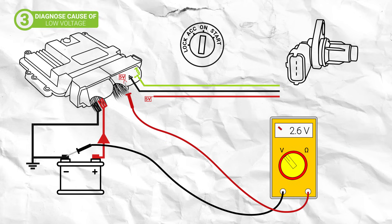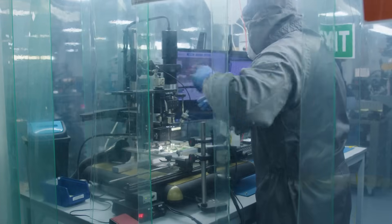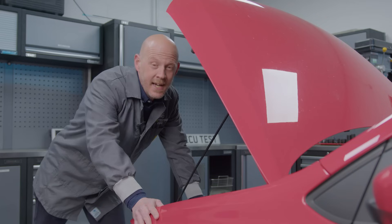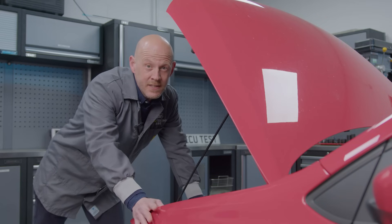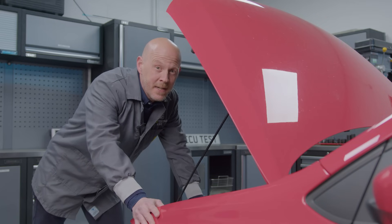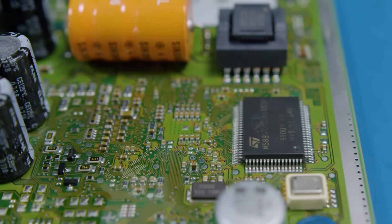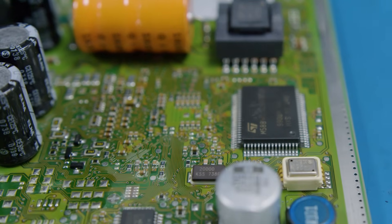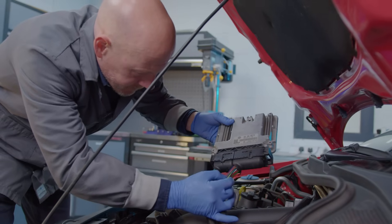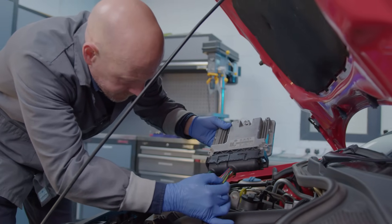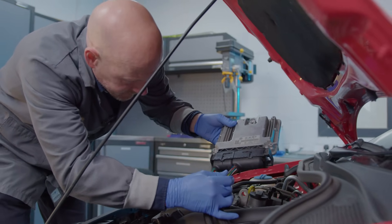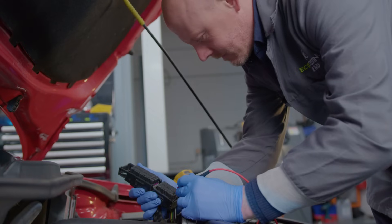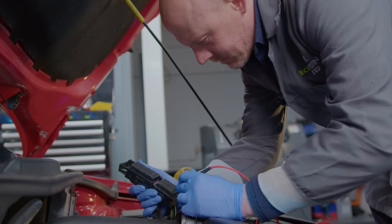However, if the reading is still lower than expected, then there is a fault within the ECU, which will need to be rebuilt. Before sending your unit in, you need to determine if the ECU fault has been caused by internal component failure or a fault within the loom. This is to ensure that once you refit the remanufactured ECU to the vehicle, it isn't damaged again by a short within the loom.